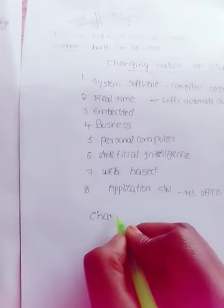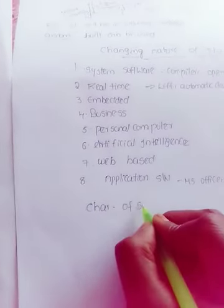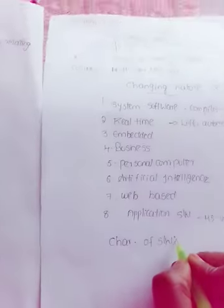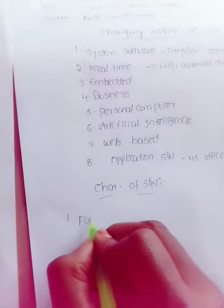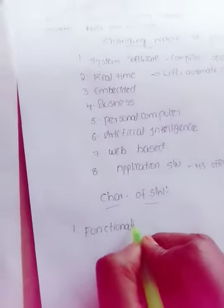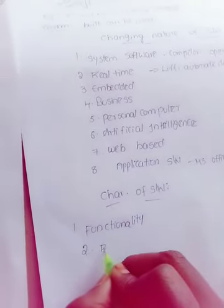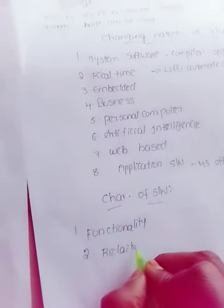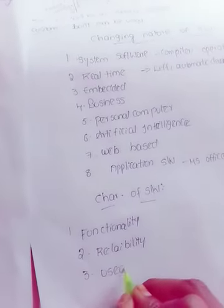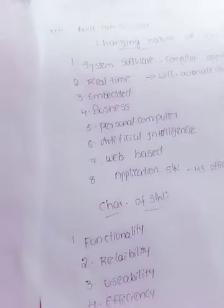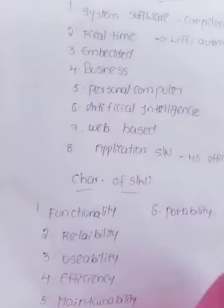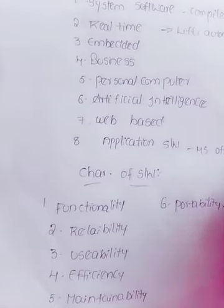Characteristics of software engineering: first, functionality; second, reliability; third, usability; fourth, efficiency; and fifth, maintainability.